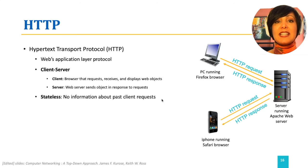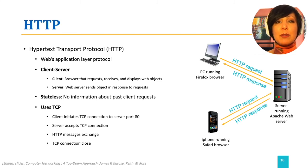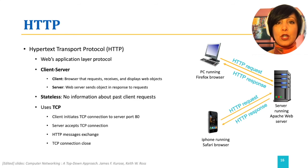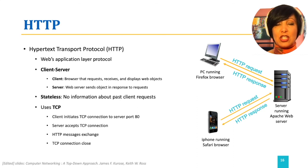HTTP needs the reliability of data, and therefore it uses TCP in the transport layer. The communication begins between the client and server with the client sending an HTTP request to port 80 on the web server, and the server accepting the TCP connection. The HTTP message exchange happens next, and the TCP connection is closed when the message exchange is complete.